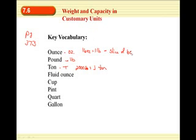So, about the size of a slice of bread. If you hold that in your hand, that tells you what an ounce is. A pound is about the size of a soccer ball. Okay, and a ton is about the size of a car, like a compact car, not a big truck or anything. A compact car.